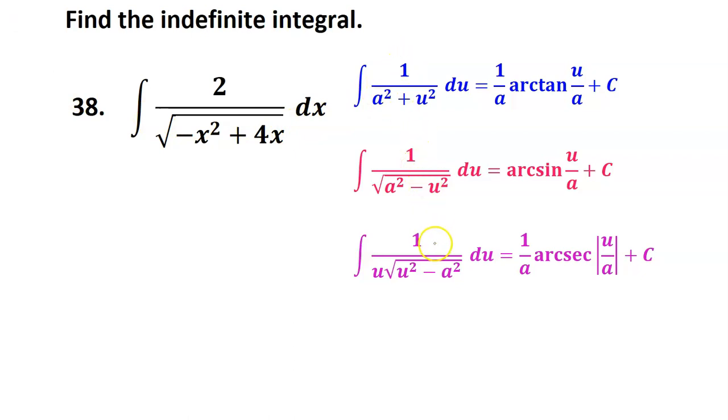These are the three inverse trig rules that you need to memorize. The question is, which one do I need to use for this problem? It's actually hard for me to tell right now. I'm pretty sure we won't be using the arctangent because the arctangent doesn't have a square root in the denominator, and I see the square root. But in this form, I really can't guess whether it's going to be arcsine or arcsecant. I'm going to need to use completing the square to rewrite this and make it more clear what I'm dealing with.